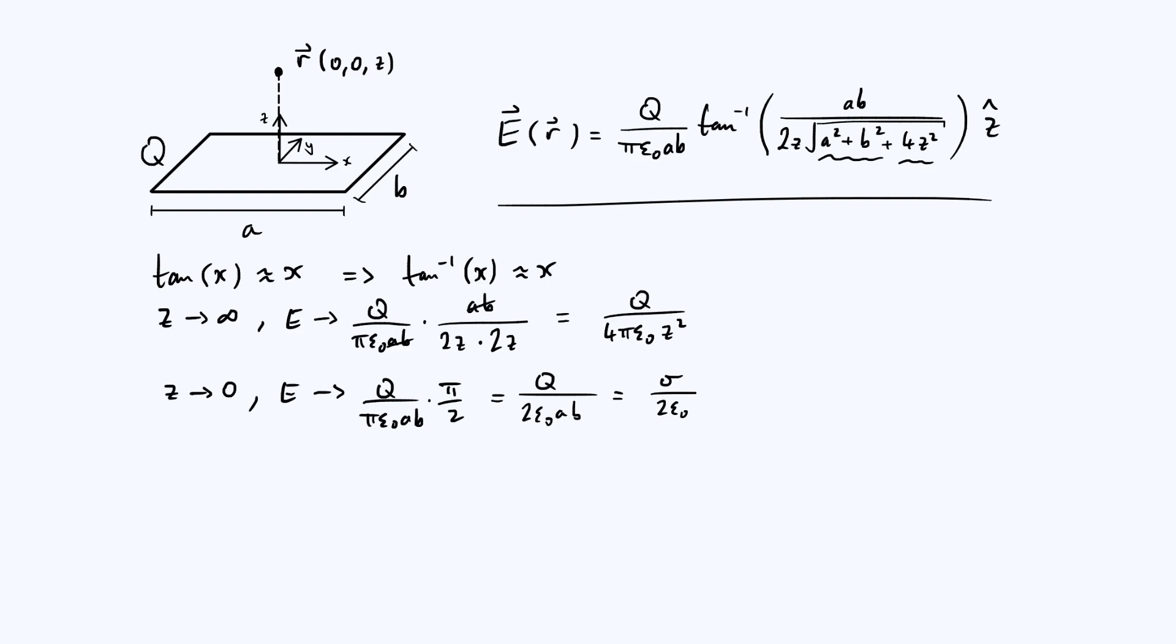So I've saved the case that I personally found most interesting until last, so let's have a look at what this third case is. Imagine taking a to infinity, so you're having sort of an infinitely long rectangular sheet of charge. At the same time, you can imagine taking b to 0, so that it's getting less and less wide, but you do that in such a way that the product a, b remains constant.